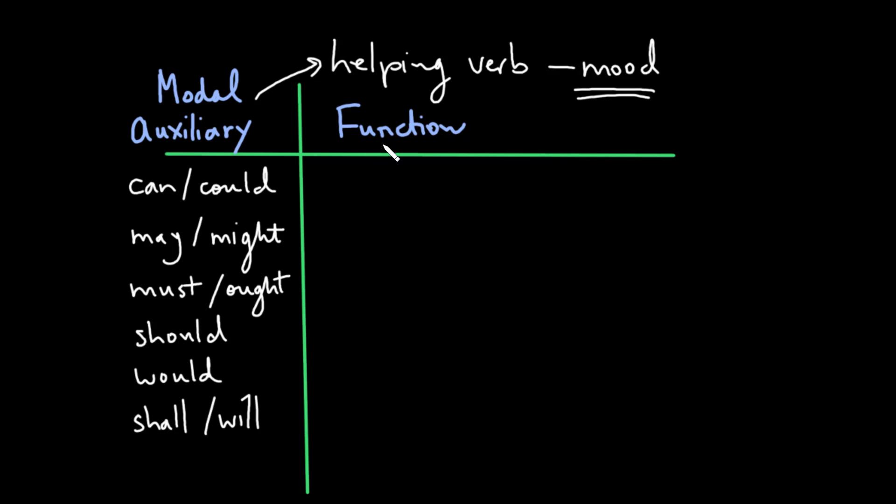Let's see how these modal auxiliaries that we have here function in different sentences. Actually we'll just look at one sentence here. Let's say you want to say I something, we'll stick our modal auxiliary in here, I something kiss her. And you can change the gender as you like.